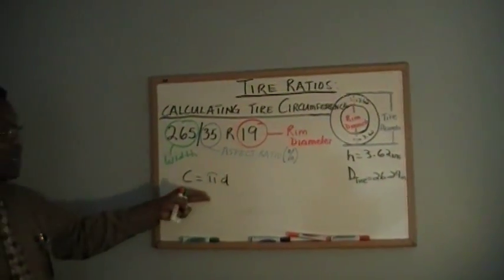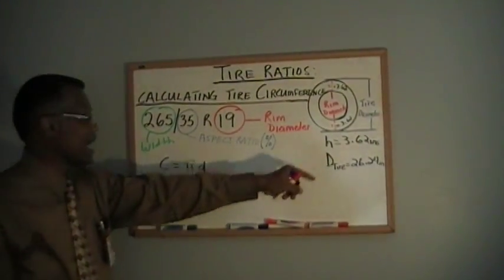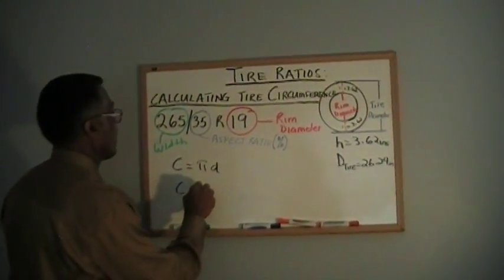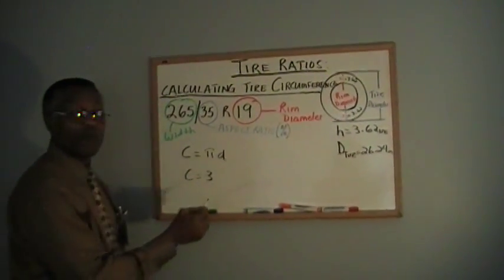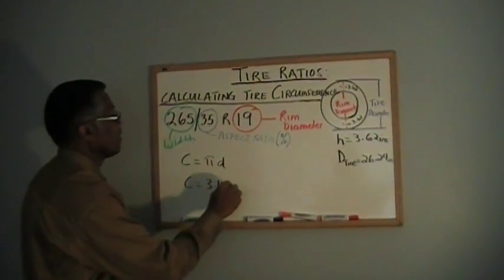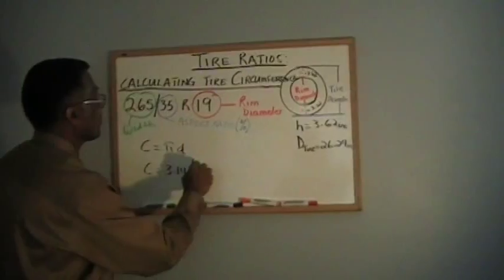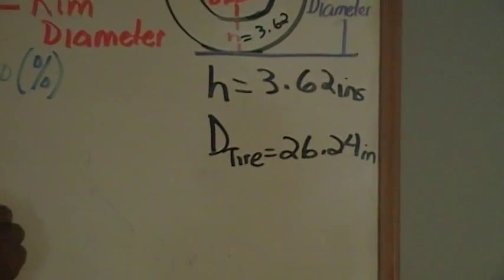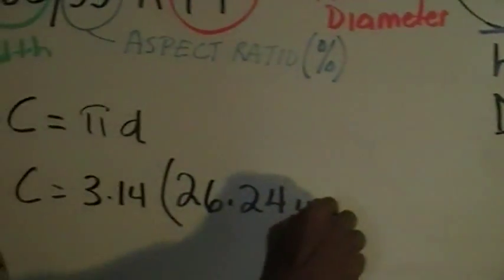Very simply put, I have my diameter. Pi is 3.14 times my diameter of 26.24 inches.